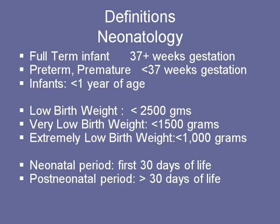A quick review of definitions: a full-term infant is 37 weeks gestation. A premature or preterm infant is less than 37 weeks. An infant is somebody less than a year of age. In terms of birth weight: low birth weight is less than 2,500 grams; extremely low birth weight is less than 1,000 grams. At 24 weeks gestation, average birth weight is about 500 grams. The neonatal period is the first month of life, and anything after that is post-neonatal.